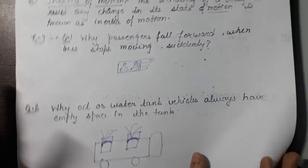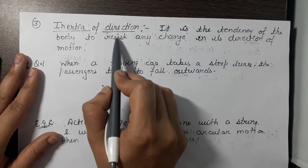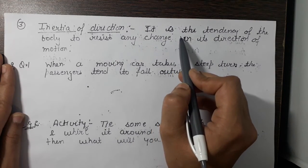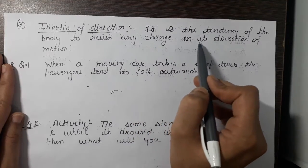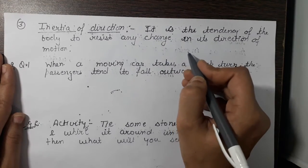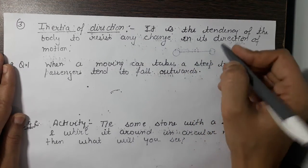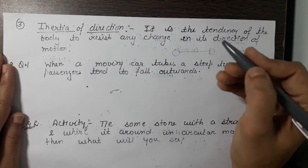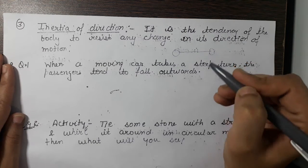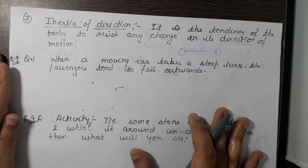Now the third type of inertia is inertia of direction. Its definition: it is the tendency of a body to resist any change in its direction of motion. As in the example of the ball — when the ball is moving in a straight line it will continue to move in the straight line unless an external force is applied. So the body tries to remain in the same direction, which is called inertia of direction.